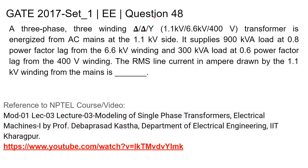Welcome all. I am going to discuss question number 48 from the GATE 2017 Set 1 Electrical Engineering. The question is: a 3-phase 3-winding delta/delta/star, 1.1 kV by 6.6 kV by 400 volts transformer is energized from AC mains at the 1.1 kV side. It supplies 900 kVA load at 0.8 power factor lag from the 6.6 kV winding and 300 kVA load at 0.6 power factor lag from the 400 volts winding. Find the RMS line current in amperes drawn by the 1.1 kV winding from the mains.